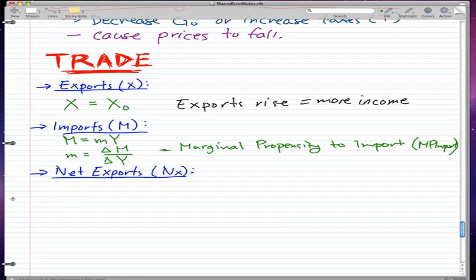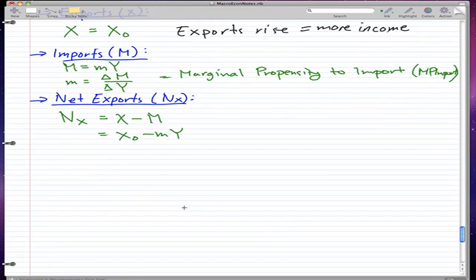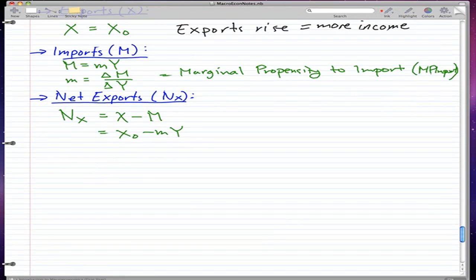Net exports is a simple concept. Net exports (NX) is simply equal to exports minus imports, or if we expand everything, X₀ minus mY.